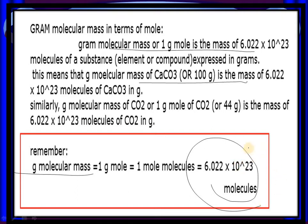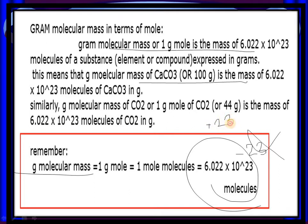When you write Avogadro's number, the power is positive 23. Many students write minus 23, which is wrong. The correct value is 6.022 × 10²³, with a positive exponent of 23.